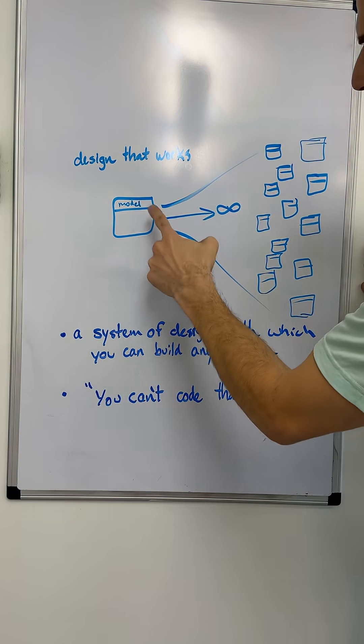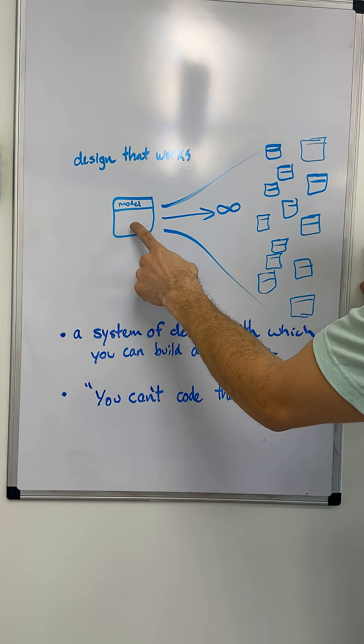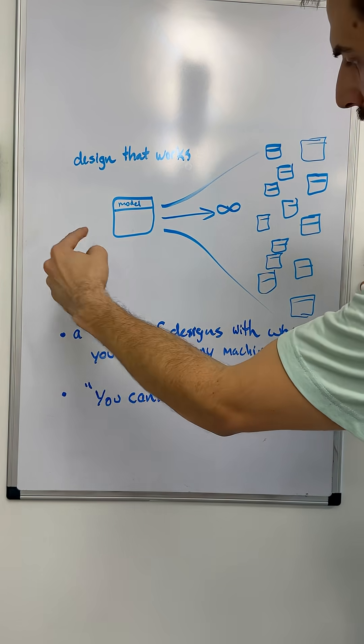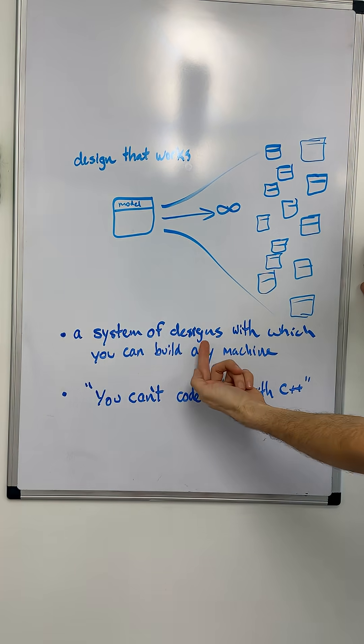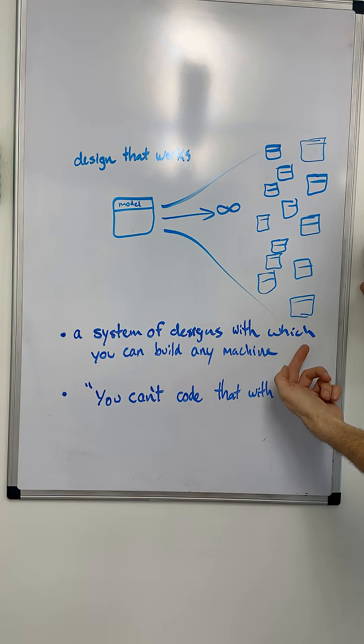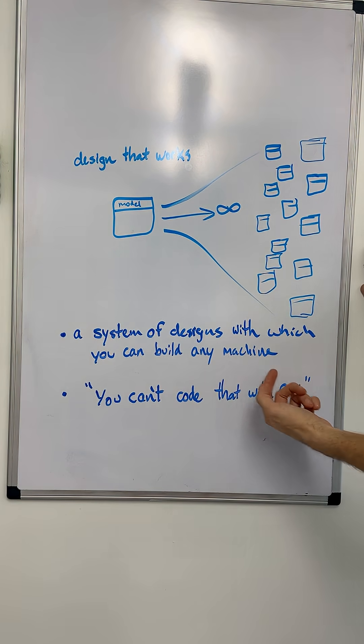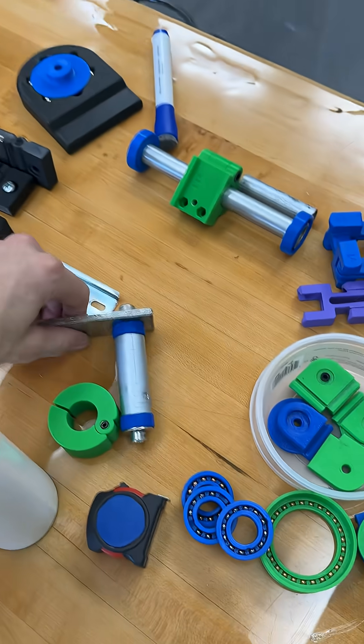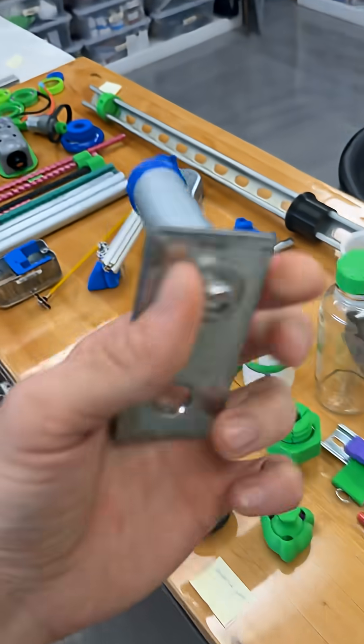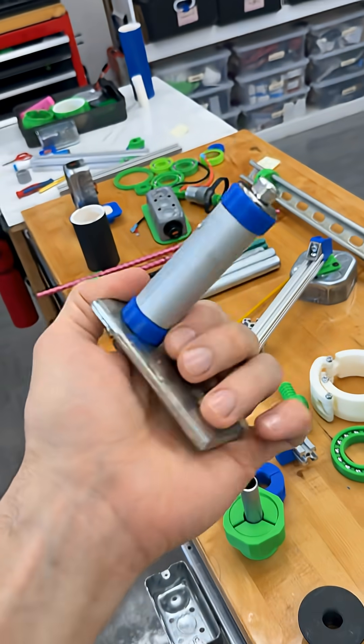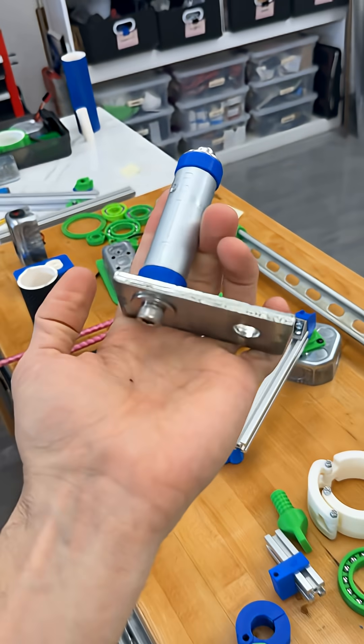But I don't want to just build a million designs. I want to create a system of designs with which you can build any machine. But let's be completely honest and true to engineering — is this even remotely possible? And I can't stop thinking about this because I've basically been doing that for the last five years.